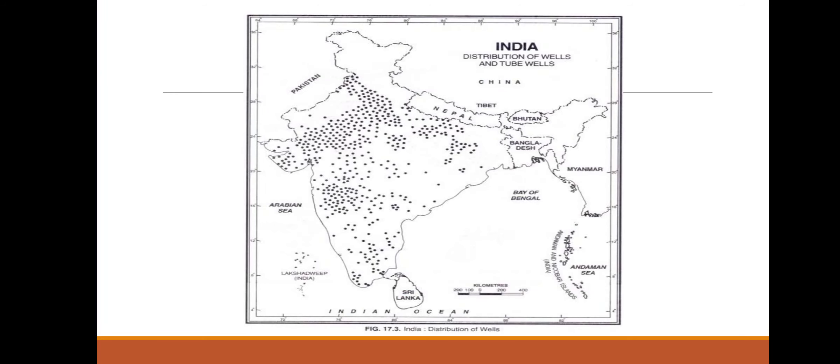Next, this map of India shows the distribution of wells and tube wells. When examining this map, the tube wells and wells are more in the northern part of India, especially in the higher levels above Madhya Pradesh. When considering Tamil Nadu, it has been distributed in some of the areas.